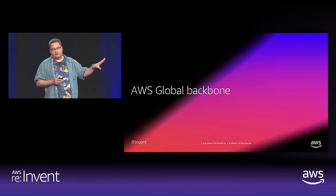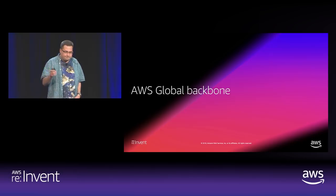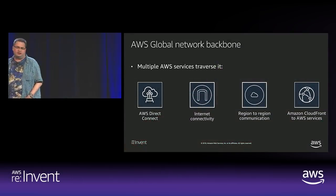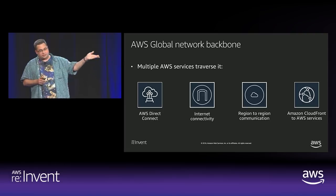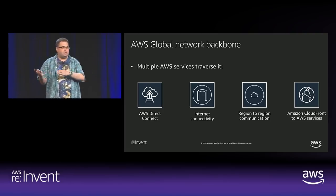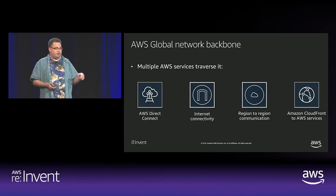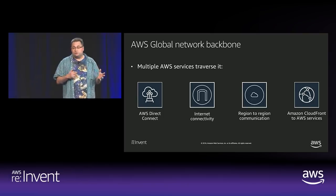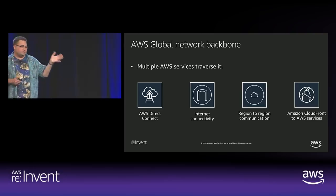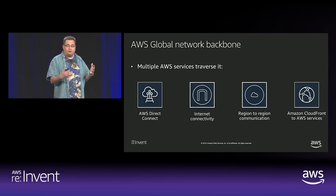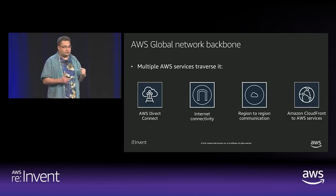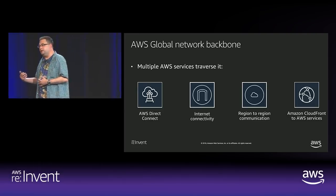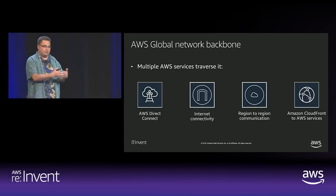Let's talk about the global backbone. A number of ADOS services ride on top of it today. ADOS Direct Connect carries traffic from direct connect pops right over the backbone into a region. Internet connectivity can also ride on the backbone to pick and choose what locations to bring traffic to and from. Region-to-region communication goes on top of the backbone. Services like Amazon CloudFront also use it — origin fetch from an ADOS resource like S3 runs over the backbone, as does S3 Transfer Accelerator, which goes through a CloudFront pop talking to our network.